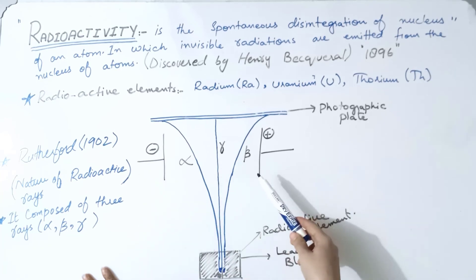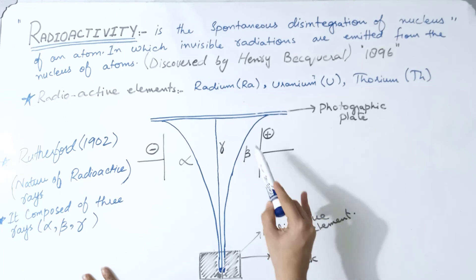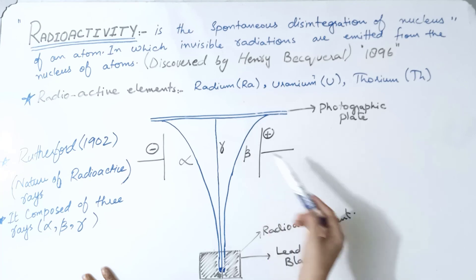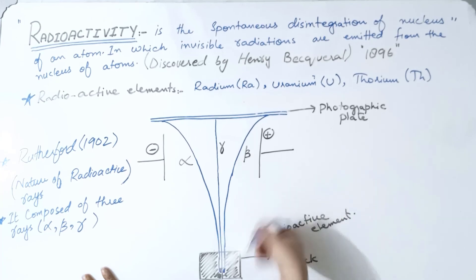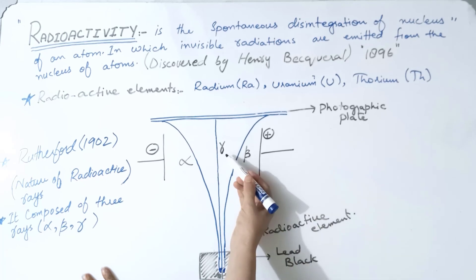Some components bent toward the positive terminal. In the electric field, they moved to the positive terminal. These are beta rays with negative charge. Some components moved in a straight line to the photographic plate. There was no charge on them, so they moved in a straight line. Rutherford named these gamma rays.